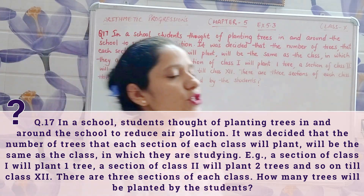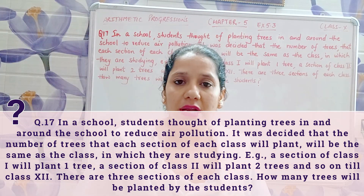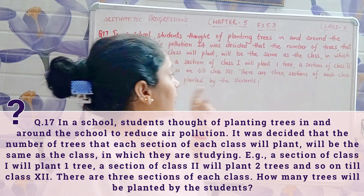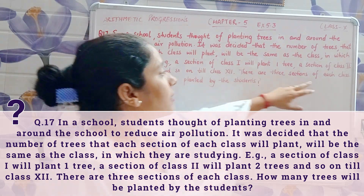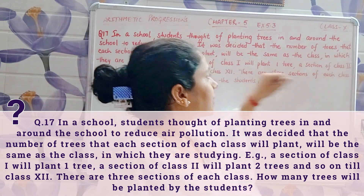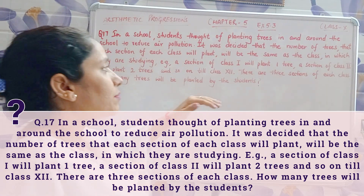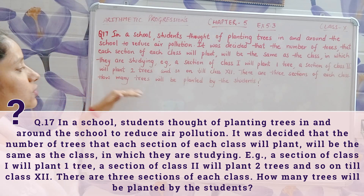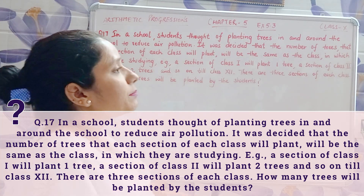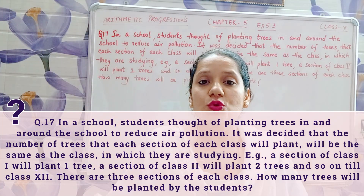There are three sections of each class — A, B, and C — meaning every class has three sections. How many trees will be planted by the students?